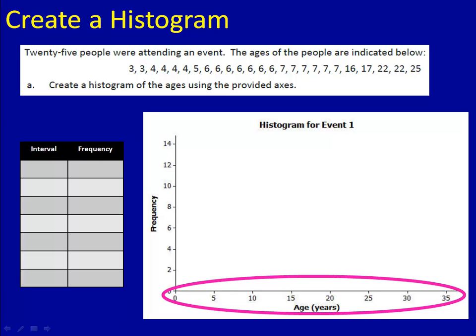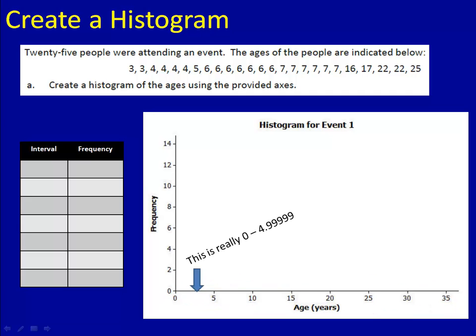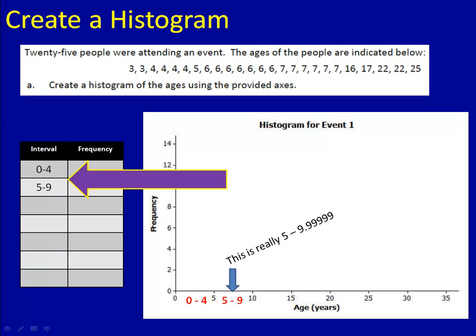The first section is 0 to 4.9. Because we don't usually say that people are 4.9 years old, we would say they're 4, we'll call that first interval 0 to 4. The second interval is 5 to 9.9. Because we don't usually say people are 9.9 years old, we'll say 5 to 9. Then, we'll record these intervals in the frequency table.